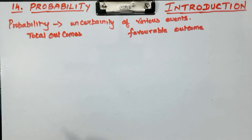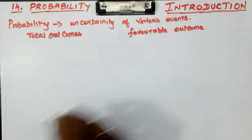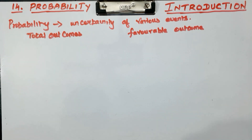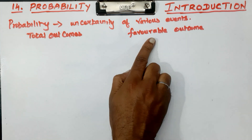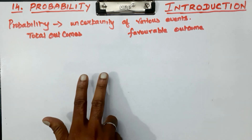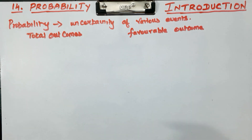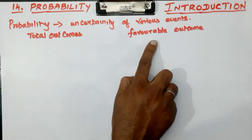For example, there is a coin. You toss the coin and ask for the total outcome. The possible outcomes are head or tail. If you ask for head, that is the favorable outcome. The total outcome is head and tail together - that is the sample space.